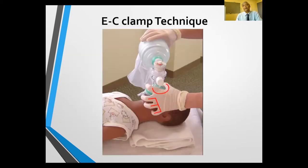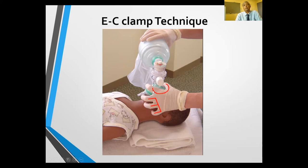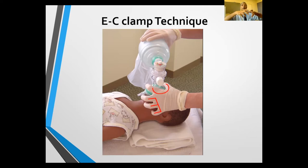I want to remind you about the EC clamp technique for holding the bag mask on the patient. The little finger goes behind the angle of the jaw, ring finger goes below the jaw, and middle finger goes below the chin. The index and thumb create a C-figure to get a good grasp on the mask, giving you a good seal while also allowing jaw manipulation. This is useful for one-hand ventilation. If you want to use both hands for a better seal, you need a second person to squeeze the bag.